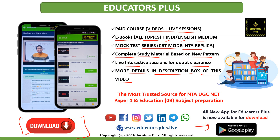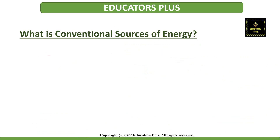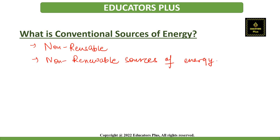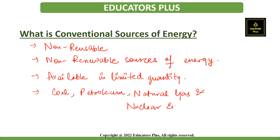Now let's start with the topic — conventional sources of energy. When we cannot reuse a source of energy after using it once, we call them conventional sources of energy. For this reason, they are also known as non-renewable energy sources. Conventional sources of energy are the most important and are available in limited quantity. They include coal, petroleum, natural gas, and also nuclear energy.